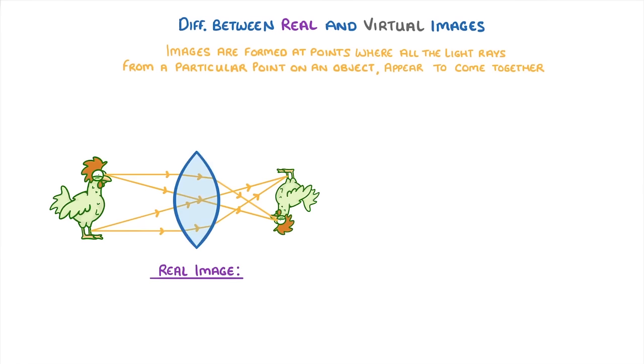A real image, like we can see here, is formed when the light rays actually do come together to form the image.